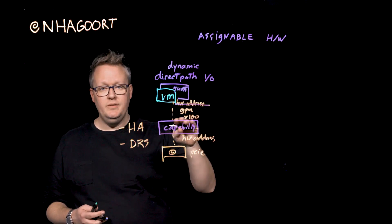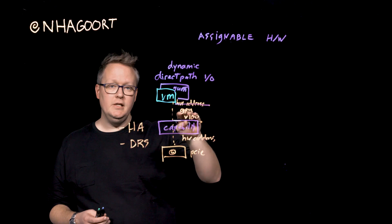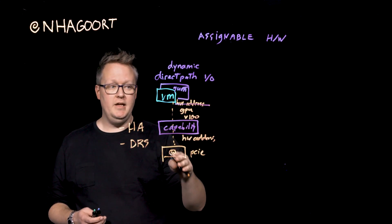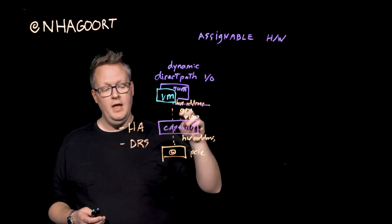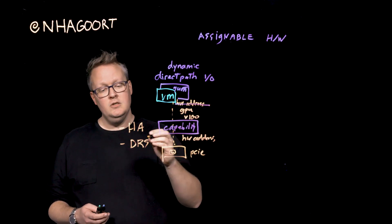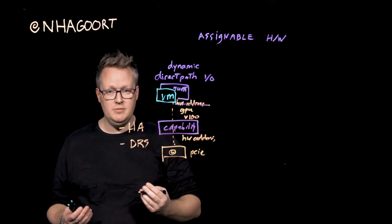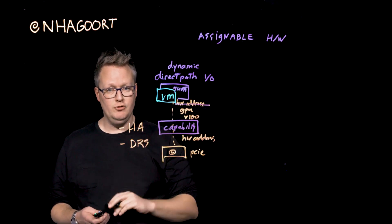Now, assignable hardware together with DRS will basically look up if there is a host in a cluster that has this specific card, and if it's available as well. So DRS will do the initial placement for such a virtual machine.